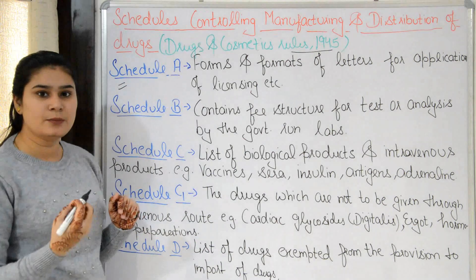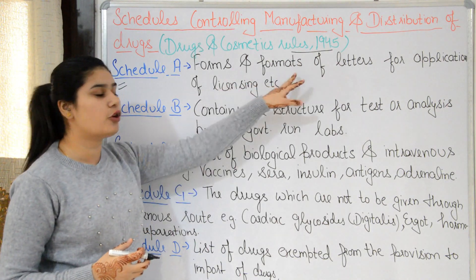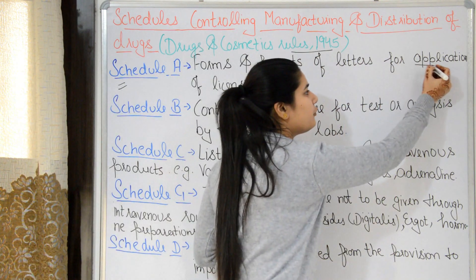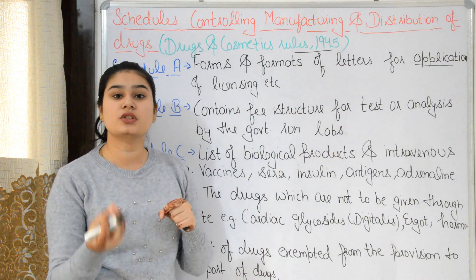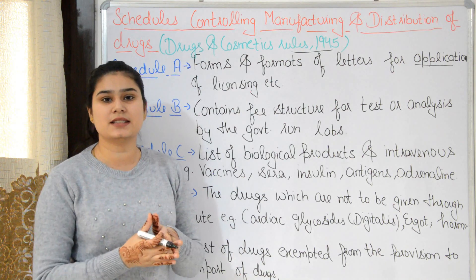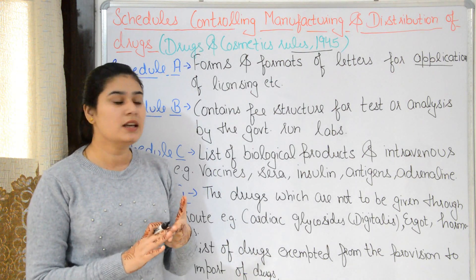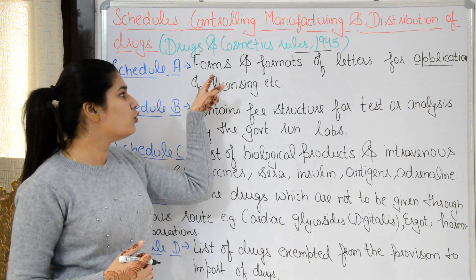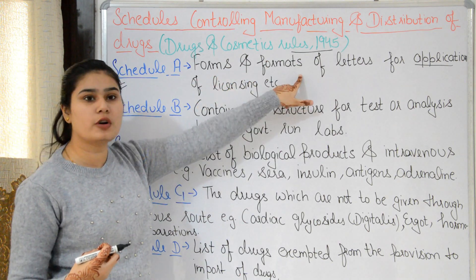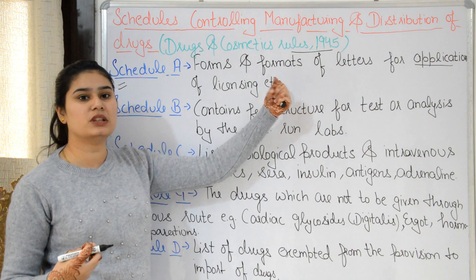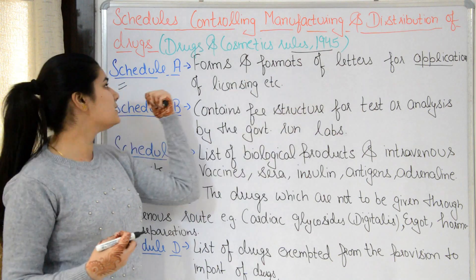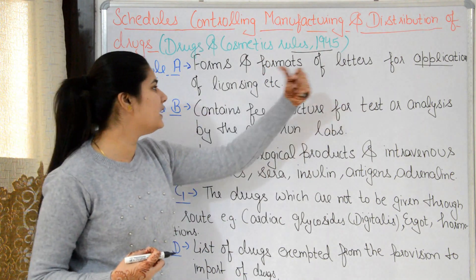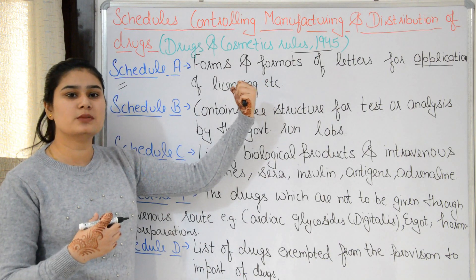The first schedule is Schedule A. Schedule A covers Forms and Formats of Letters for Application of Licensing. So whenever we apply for a drug license, we need to submit an application. The forms and formats of the letters required for that application and licensing are available in Schedule A.